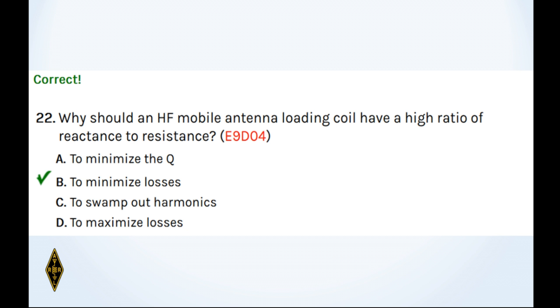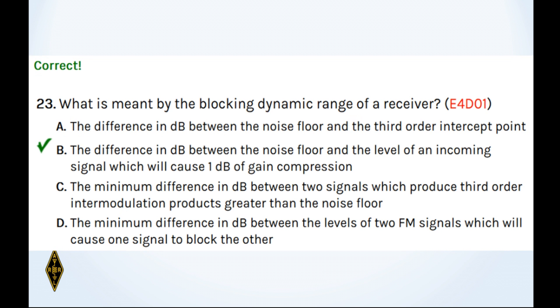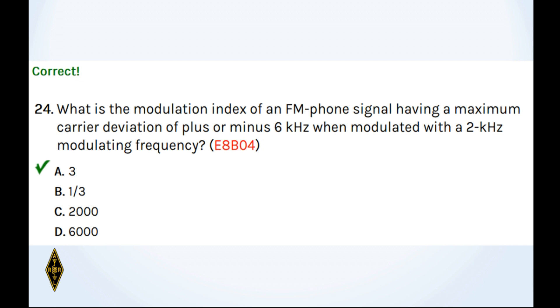And 23, what is meant by the blocking dynamic range of a receiver? It's that point that the receiver amplifiers can give no more amplitude. They start to compress. Up until that time, you increase by a dB, it'll go up by a dB. But you get to a certain point where you increase by a dB and it won't go up. That's the blocking dynamic range. It's the only answer with 1 dB in it. If you remember my graphic with the arrows pointing at 1 dB. And 24, what is the modulation index? Big number divided by small number, 3. And 25, what type of wave has a rise time faster than its fall time? That's the sawtooth wave.